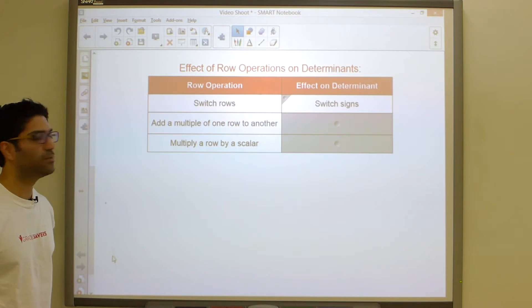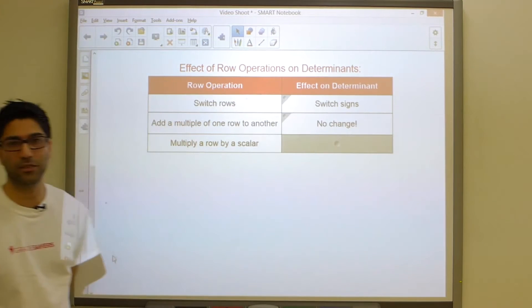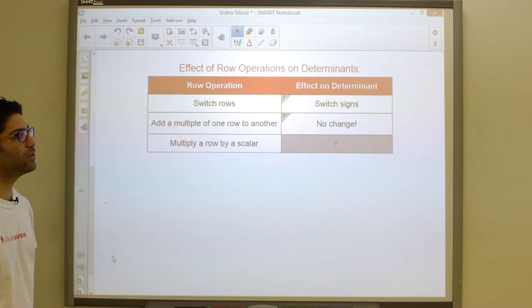The next one is the most interesting one to us. It turns out that adding a multiple of one row to the other, usually done to create a zero somewhere, actually has absolutely no effect on the determinant. And this is what we're going to use to our advantage. We're going to exploit this property.